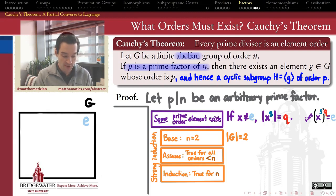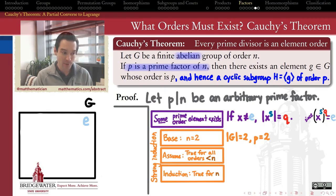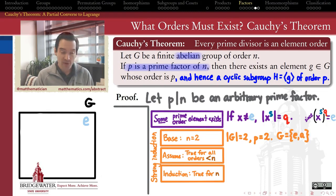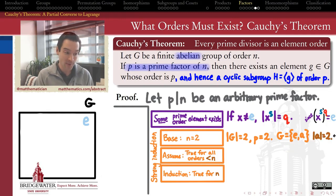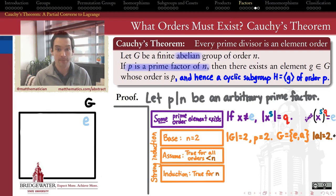The base case is when the order of G equals 2. In that case, P must be a prime dividing 2, so P = 2. There is only one group of order 2 up to isomorphism: it consists of the identity and one non-trivial element, and that non-trivial element must already have order 2. So the base case is dispatched quickly.